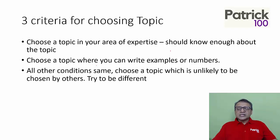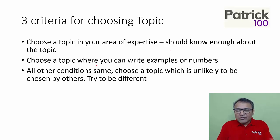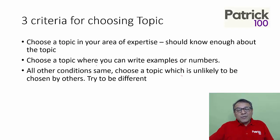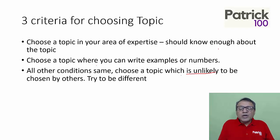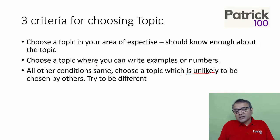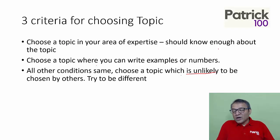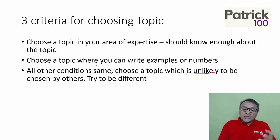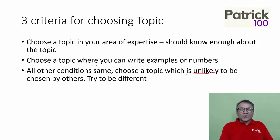Third, if all the conditions are the same — meaning you almost know two topics and have similar examples in both — then try to pick up a topic which is unlikely to be chosen by others. Try to be different and show that you can write on different topics. Pick a topic where others may not have enough content, but you do. These are the three criteria based on which you can choose a topic.